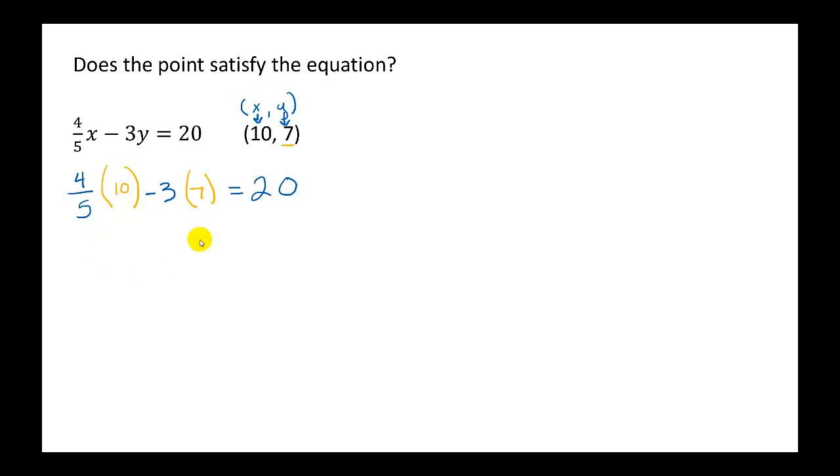So now I need to deal with the parentheses. I could say 4 times 10 and divide that by 5, or I could say 5 goes into 5 and 10. 5 goes into 5 one time, 5 goes into 10 two times. So 4 times 2 divided by 1, that gives me an 8.